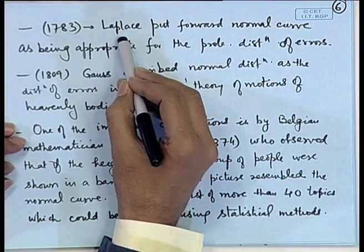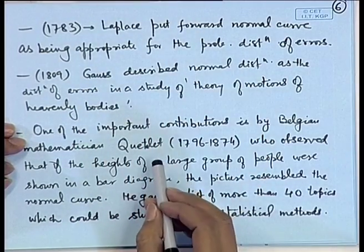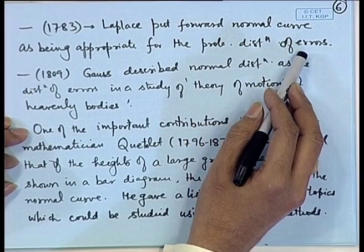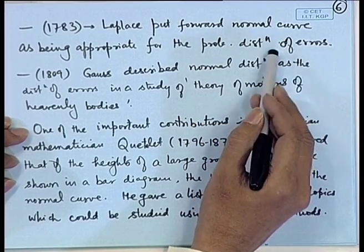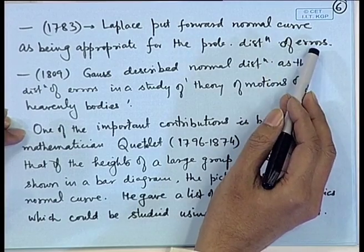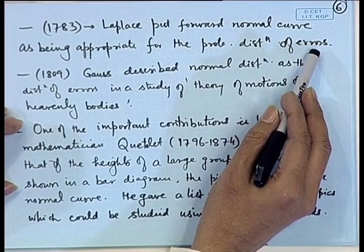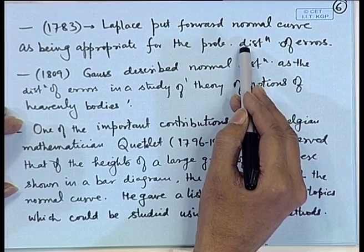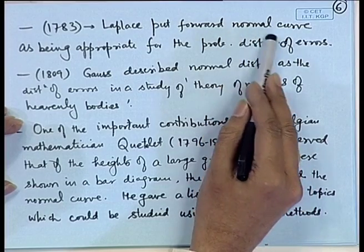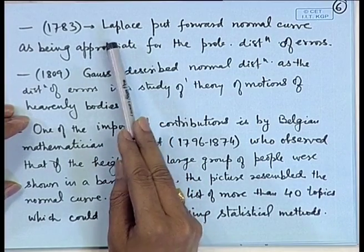The great French mathematician Laplace, in his manuscript in 1783, said that the normal curve can be used for describing the probability distribution of errors. When we are doing certain measurements and those measurements are not accurate due to the measuring instrument or the person measuring, there may be errors. When you take several observations, you have several values corresponding to those errors, and if you plot the frequency curve of that, it looks like a normal distribution curve. This theory was propounded by Laplace.